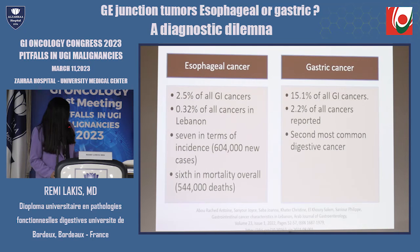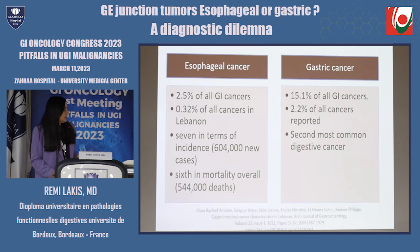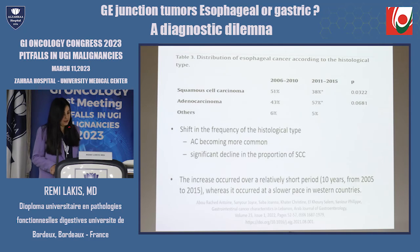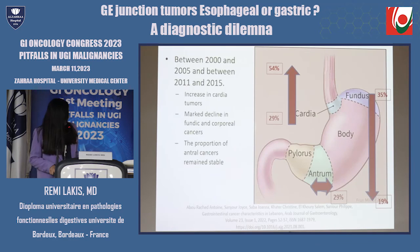What about Lebanon? A study by Dr. Abu Rashid in 2022 showed that esophageal cancer represents 2.5% of all GI cancers, and gastric cancer is the second most common digestive cancer after colorectal cancer. Lebanon is also following the Western shift in the frequency of histological type for the esophagus, with adenocarcinoma becoming more common. The same applies for gastric cancer: increase in cardiac tumors, decrease in fundic and corporeal tumors, and stability in antral tumors.